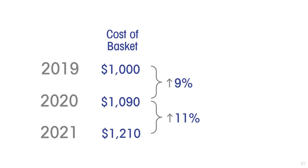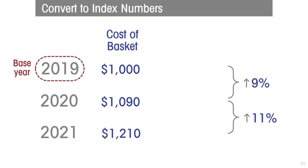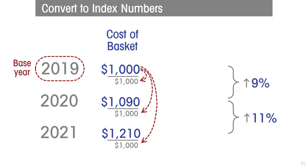Even though we now have an estimate of inflation, we're going to complicate the calculation in order to explain what a consumer price index is. We're going to convert our calculation to index numbers. First, we select a base year — we choose 2019. Step one is to divide the cost of the basket in every year by the cost of the basket in the base year, so in this case all the costs are divided by 1,000.